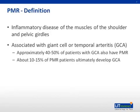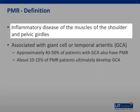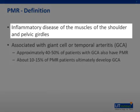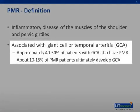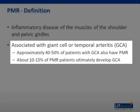So what is PMR? As best we can tell, it's an inflammatory disease that primarily affects the musculature, as well as the surrounding structures of the shoulder and pelvis girdles. PMR is closely related to another disease, giant cell arteritis, which is a vasculitis of the large vessels of the body. Giant cell arteritis and PMR may actually represent different clinical spectrums of a single disease process.